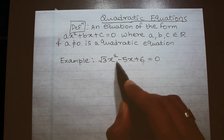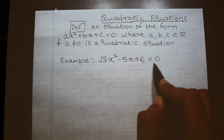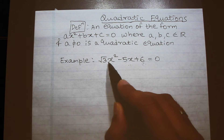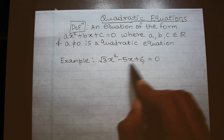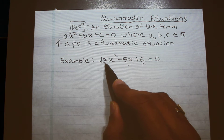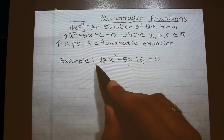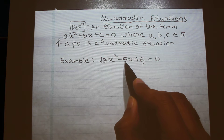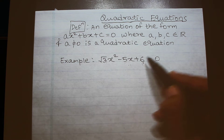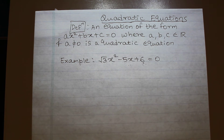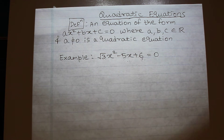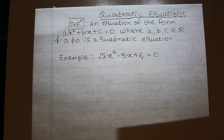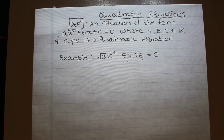Let us look at an example: √3·x² − 5x + 6 = 0 is a quadratic equation because a, b, and c are all real numbers and a is not equal to zero. Note that from the definition, b or c can be zero, or even both b and c can be zero, and the equation will still be a quadratic equation.